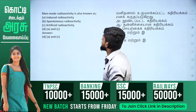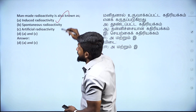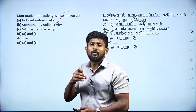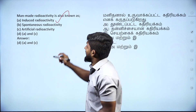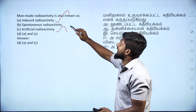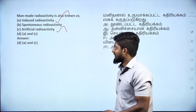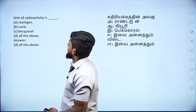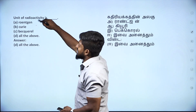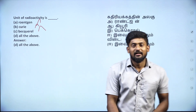Man-made radioactivity is also known as induced radioactivity or artificial radioactivity. The unit of radioactivity — Rutherford, Curie, Becquerel — these are all units of radioactivity. So the answer is all of these.